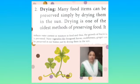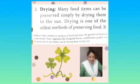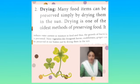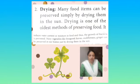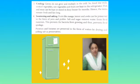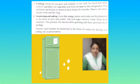'Many vegetables like fenugreek leaves, cauliflower, and ginger can be preserved in our homes just by drying them in the sun.' This method is very successful — you can see food items being dried in the kitchen for use over a long time. Next is cooling: 'Germs do not grow and multiply in the cold. So food like milk, cooked vegetables, raw vegetables and fruits are kept in the refrigerator.' Food like milk, fruits, and vegetables are stored in the fridge where bacteria or germs cannot grow.